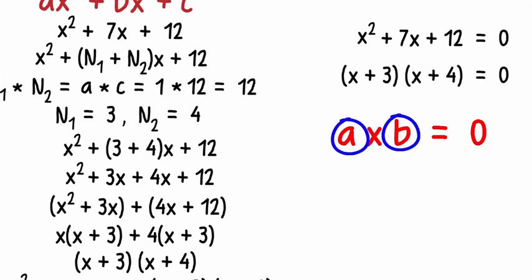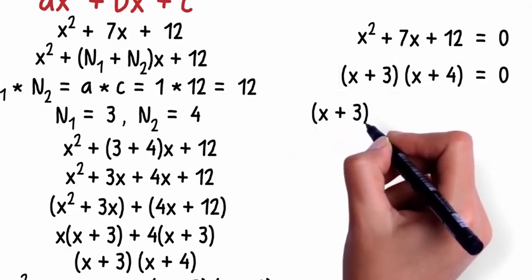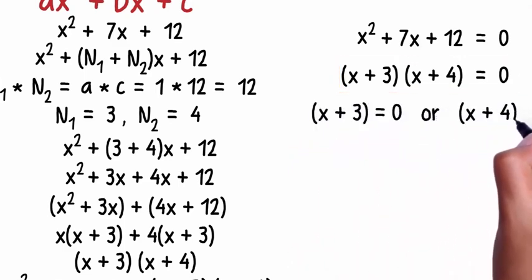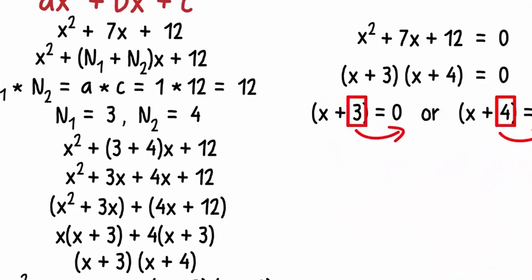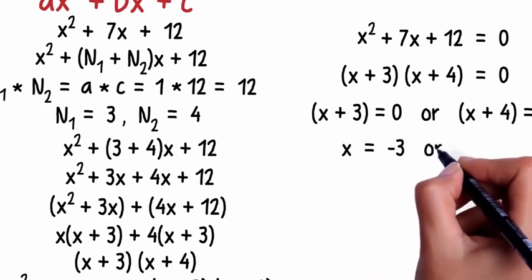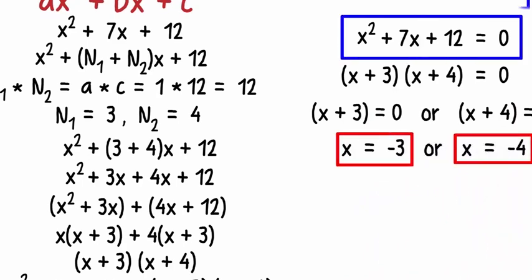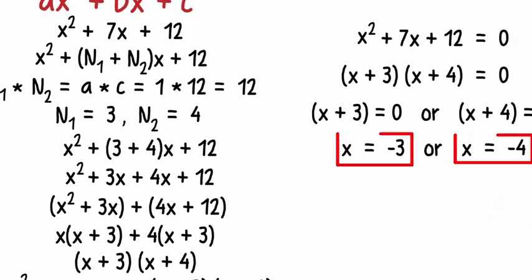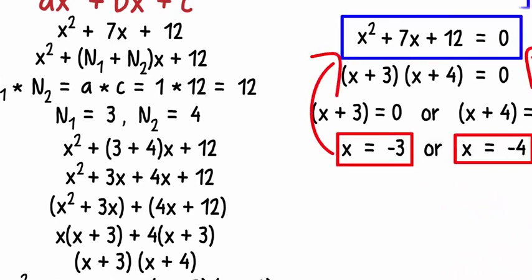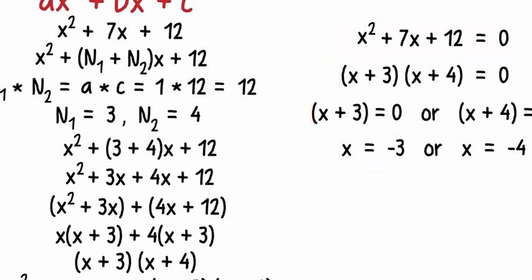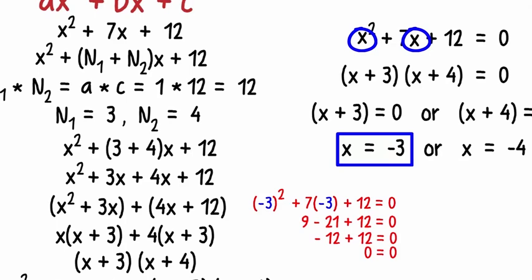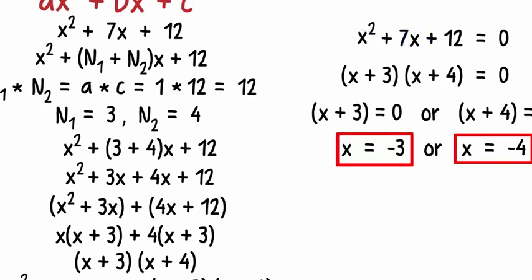Now I want you to think about it logically. When the product of a and b equals 0, we can imply that at least one of them will be 0. Either a or b will be 0. If we apply the same concept to this, we can say that either (x + 3) = 0 or (x + 4) = 0. Transposing the constants to the right, we can say that x = -3 or x = -4.